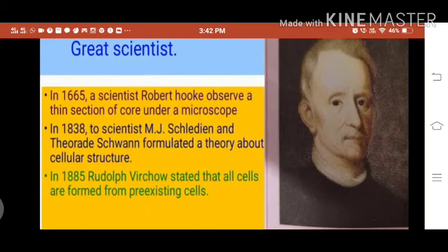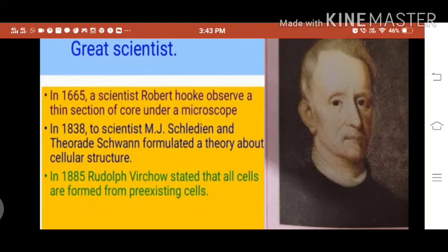In 1838, the two scientists M.J. Schleiden and Theodore Schwann formulated a theory about cellular structure, which stated all the living organisms are made up of cells. In 1885, Rudolf Virchow stated that all cells are formed from pre-existing cells.